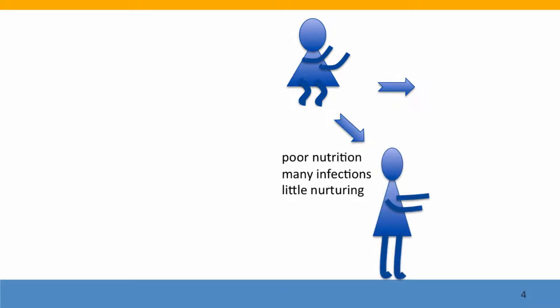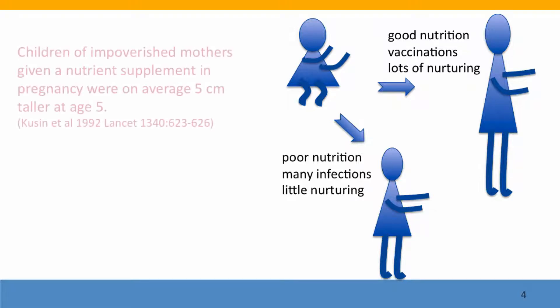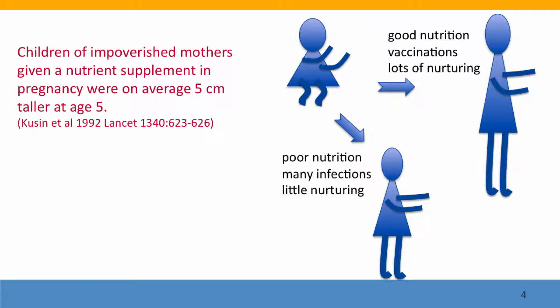If she's in a poor environment where she gets many infections, not enough nutritious food, and little emotional care or nurturing, she's going to be shorter than if she grows up in an environment with good nutrition. She gets her vaccinations so she doesn't get infections, and she gets lots of tender loving care. And this is not just opinion — there is solid data supporting this.